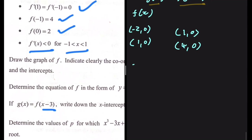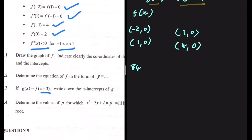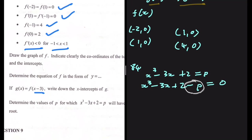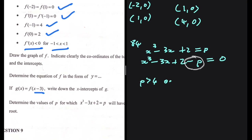Question 8.4: determine the values of p for which x³ - 3x + 2 = p has exactly 1 root. Exactly 1 root means exactly 1 x-intercept. Rewriting: x³ - 3x + 2 - p = 0, so -p shifts the graph up and down. The answer is p > 4 or p < 0. If you want to know how this comes about, click the video on your screen.